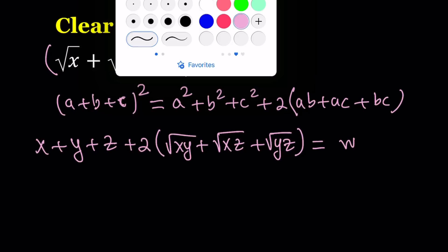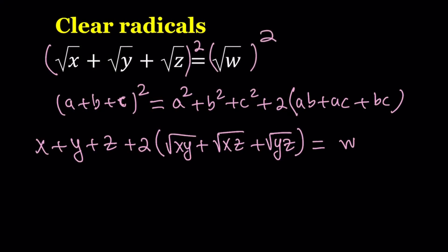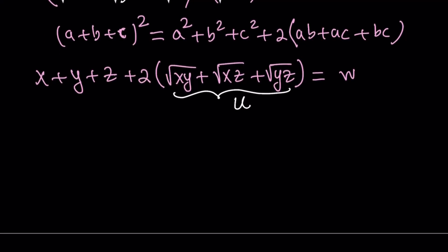But before we go any further, I would like to use substitution. You know, substitution is one of my favorite methods, and this expression right here, I would like to call that u. So u is equal to square root of xy plus square root of xz plus square root of yz. So let's go ahead and write what it means. So now I have square root of xy plus square root of xz plus square root of yz equals u.